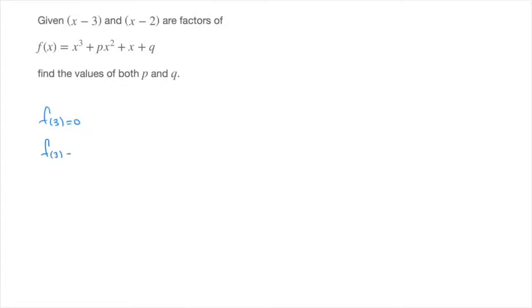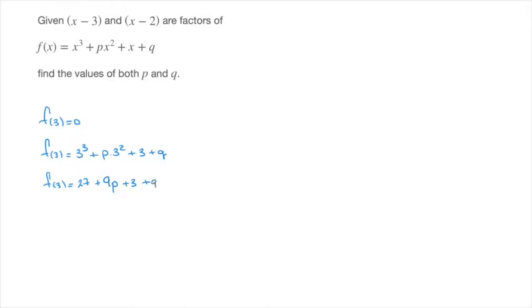f of 3 is equal to 3 raised to the power of 3, plus p times 3 squared, plus 3, plus q. That's f of 3 equals 3 cubed, which is 27, plus p times 3 squared, that's p times 9, so that's 9p, plus 3, plus q.